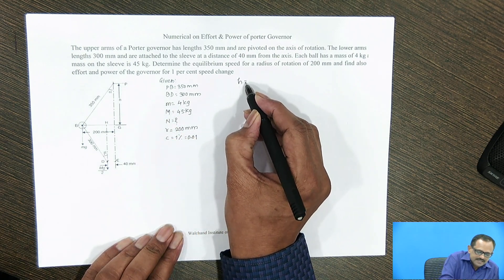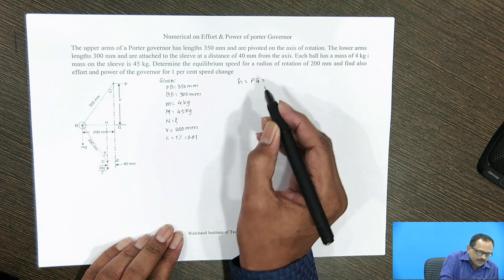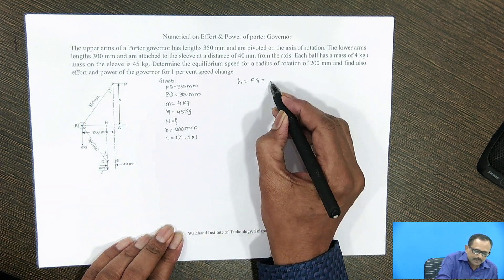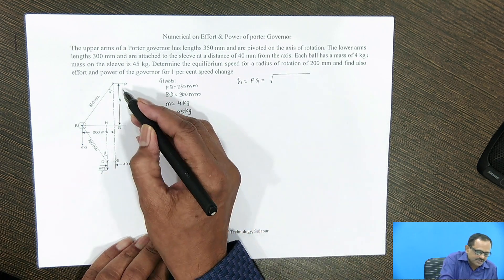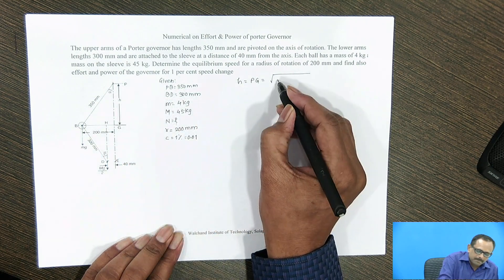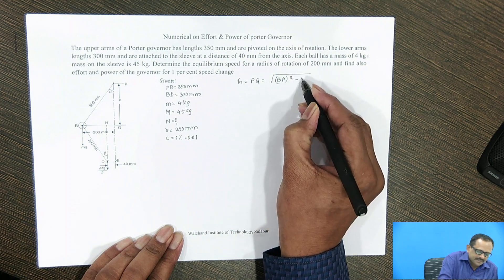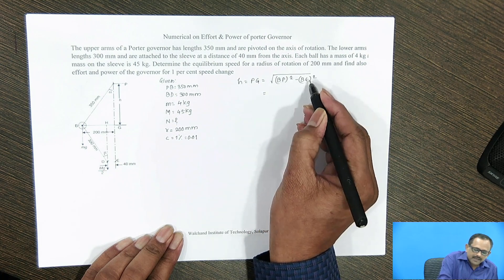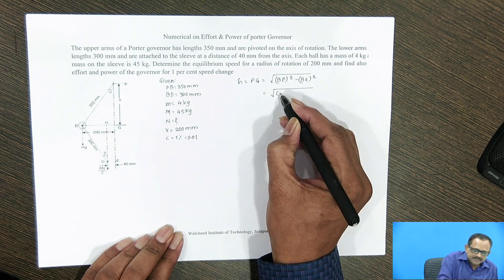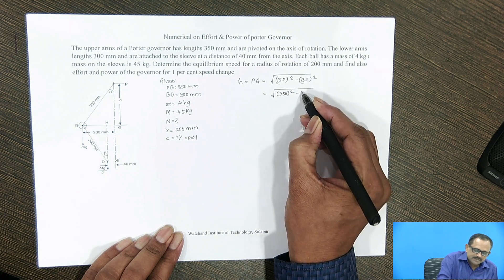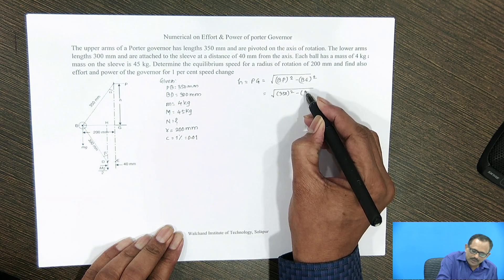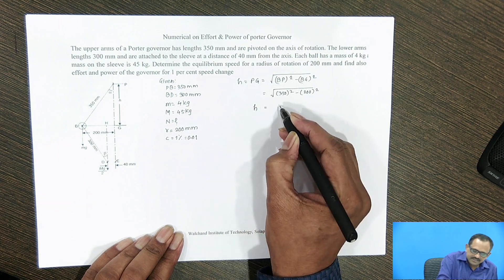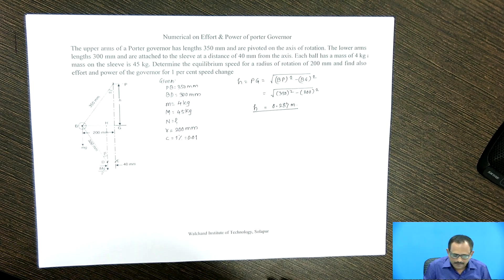Height of the governor h equals PG. Looking at triangle PBG, it is a right angle triangle. So, according to the Pythagorean theorem, the length of PG equals the square root of BP squared minus BG squared. Putting in the values: BP is 350 mm and BG is 200 mm. The height of the governor h is equal to 0.287 meter.